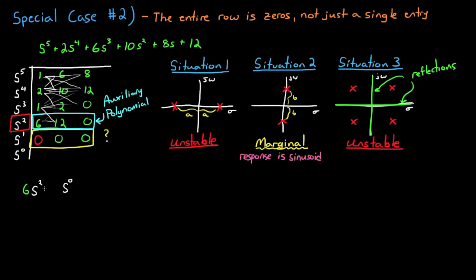For example, the auxiliary polynomial coefficients are 6 and 12, and since the row is the S-squared row, you would write the auxiliary polynomial as 6S-squared plus 12, or you can simplify it by dividing out 6 to just be S-squared plus 2.